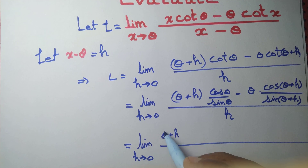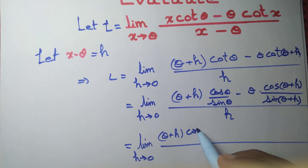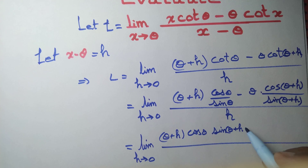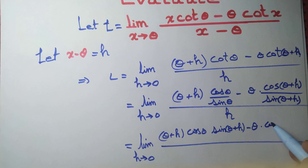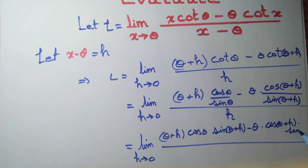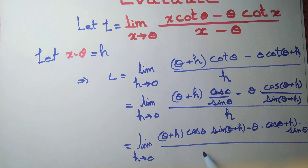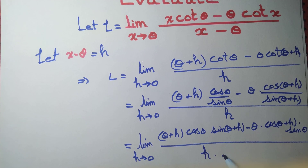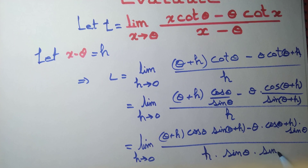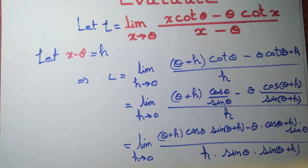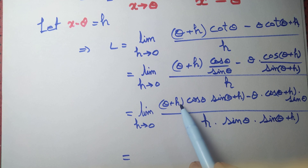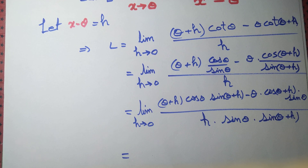After taking LCM and cross-multiplying, the numerator becomes (θ+h)·cos(θ)·sin(θ+h) minus θ·cos(θ+h)·sin(θ), all divided by h·sin(θ)·sin(θ+h). Since we have h in both numerator and denominator, we can cancel that term out. So let's break this quantity.